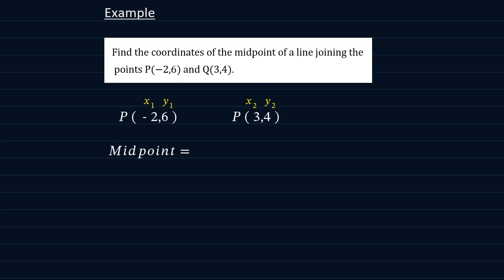This will mean that for the midpoint, we'll be saying minus 2 plus 3 all over 2 and 6 plus 4 all over 2.